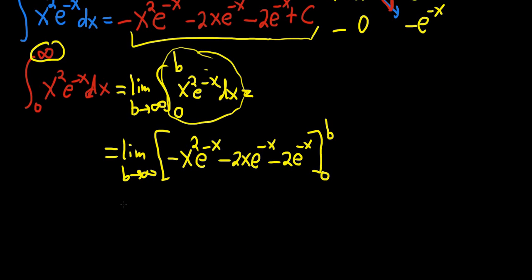All right, then you plug in the b first. So this is equal to the limit as b approaches infinity. Plugging in the b for all the x's, that will give us -b²e^(-b) - 2be^(-b) - 2e^(-b). So you put b's where all the x's are.